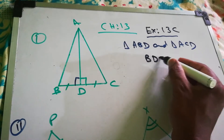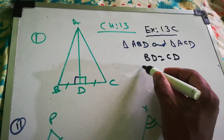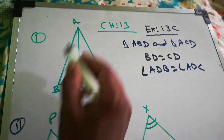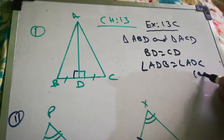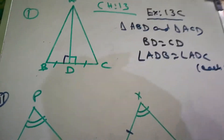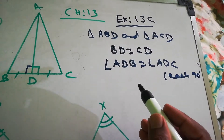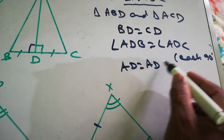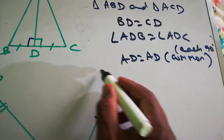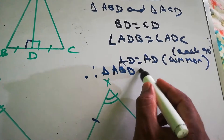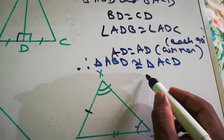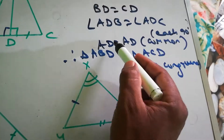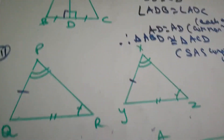BD is equal to CD, and angle ADB equals angle ADC, each 90 degrees. The common side is AD, so AD equals AD. Therefore, triangle ABD is congruent to triangle ACD by side-angle-side congruence.